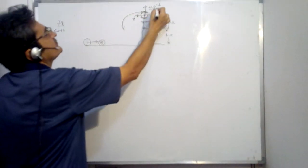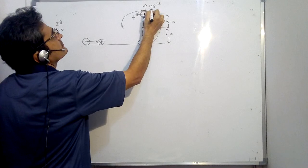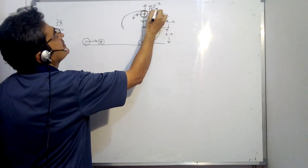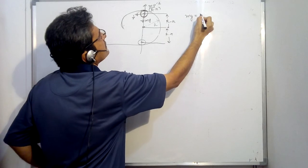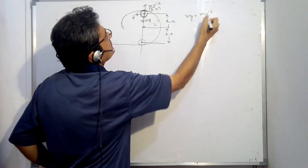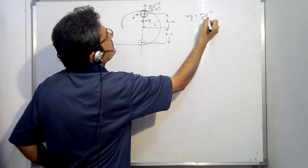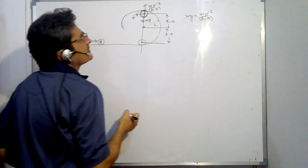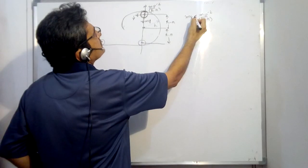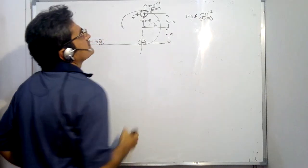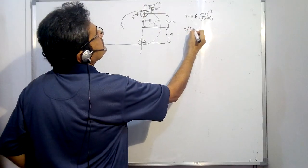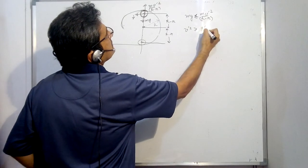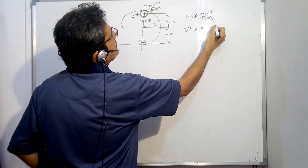Now the centrifugal force will be MV' square upon R minus r. And this has to just balance. So Mg would be equal to MV' square upon R minus r. Or you can write this should be greater than or equal to this. So V' square should be greater than or equal to G(R minus r).